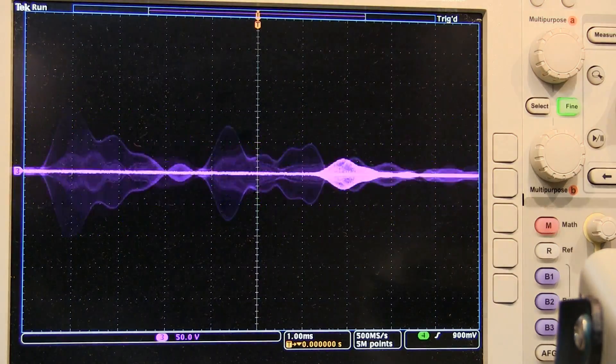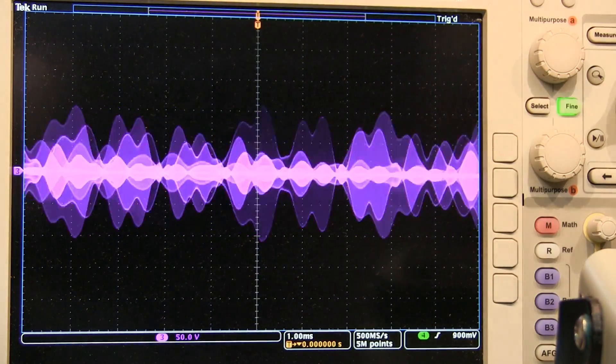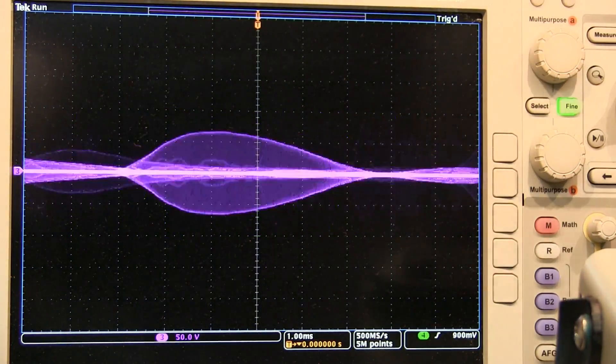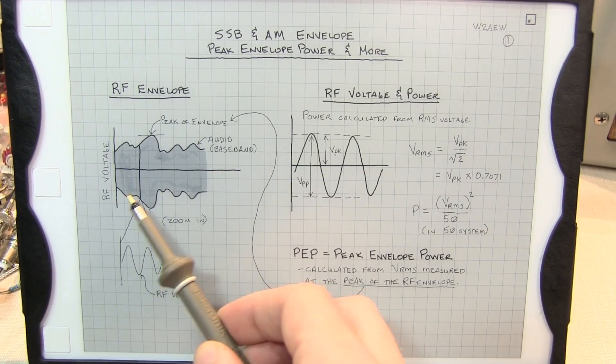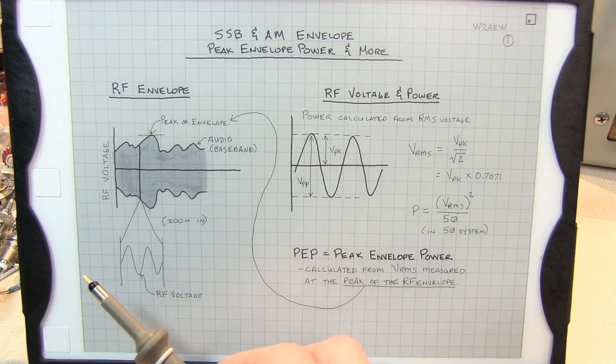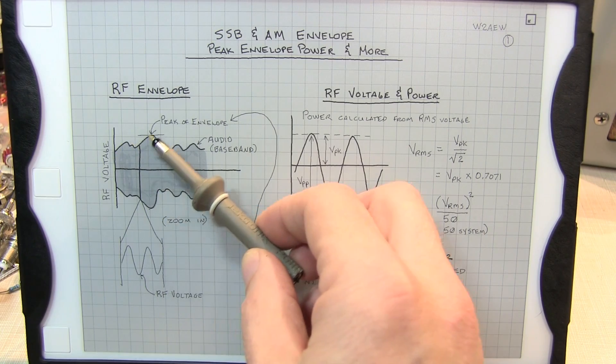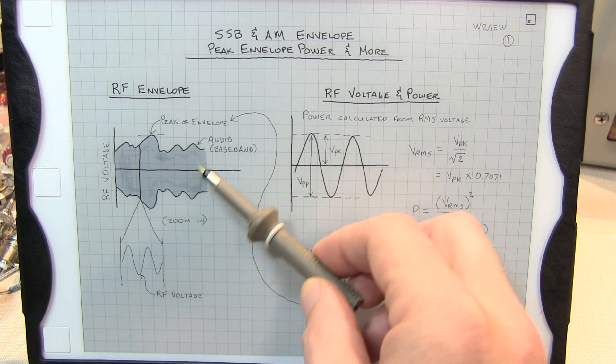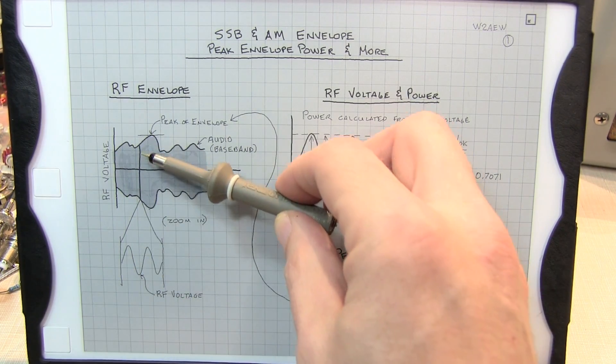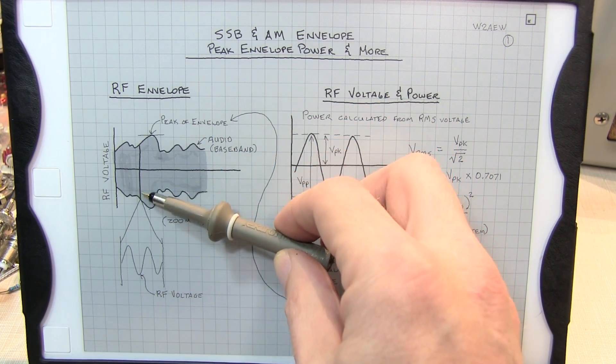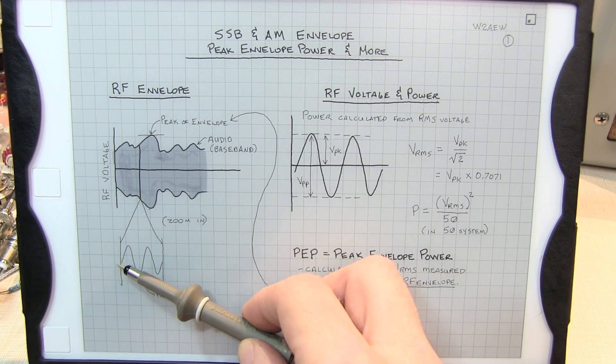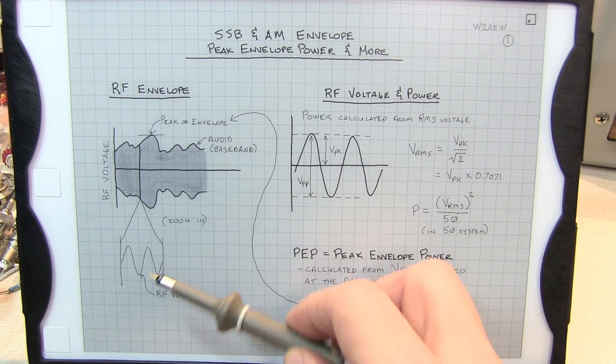The RF envelope can be defined as traces that follow the extremes of the RF signal. Let's take a closer look. Here's an example of looking at a modulated RF signal. The dark traces above and below represent the RF envelope, and if we zoom in anywhere within here and zoom in very far, we'd actually be able to expand it out and actually see the RF signal itself.